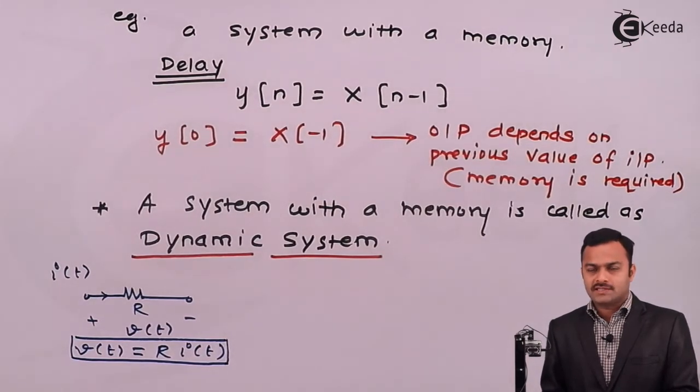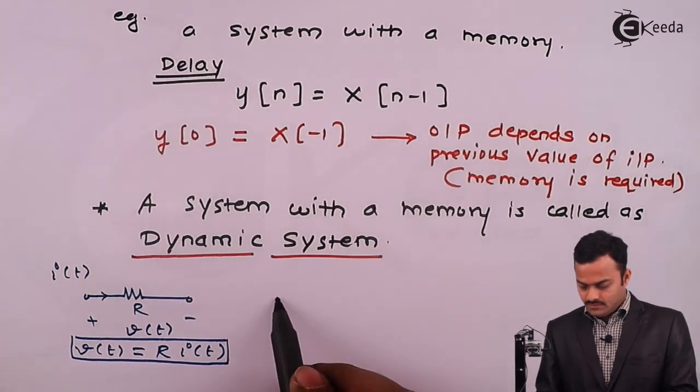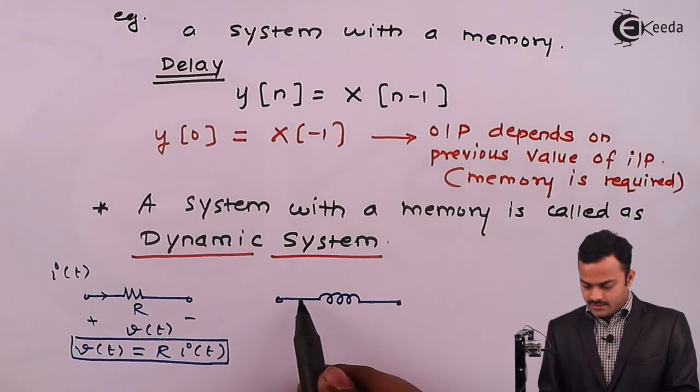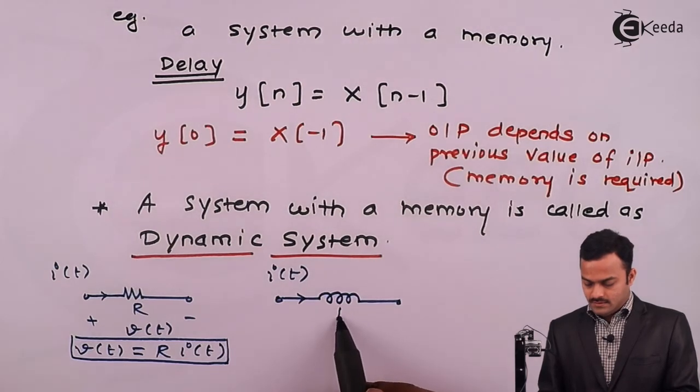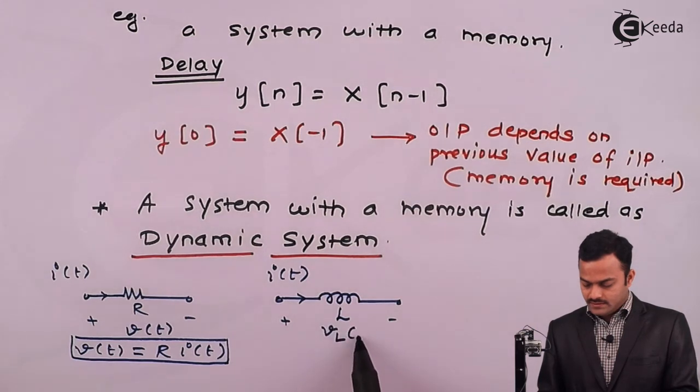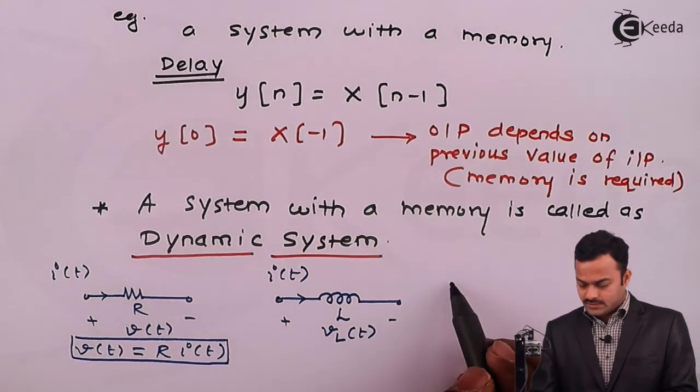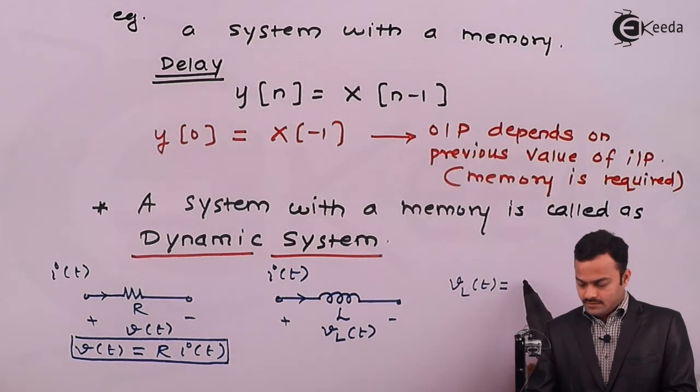But suppose I am having an inductor and current flowing through it, let's take it's I of t and L is the value. Here also voltage will be developed which is V of t. In this case suppose I need to know what is the voltage across inductor, it is V of t equal to L di by dt.